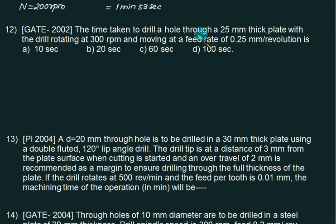For this question, the time taken to drill a hole in a 25mm thick plate with drill at 300 RPM moving at a feed rate of 0.25mm/rev. We are given thickness, N, and feed. Time equals L upon FN. This time approach is not considered, over travel is not considered. L is 25, feed is 0.25 into 300.